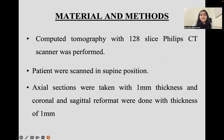CT was performed on a 128-slice Philips CT scanner. Patients were scanned in the supine position. Axial sections were taken with 1 mm thickness, and coronal and sagittal reformats were done with a thickness of 1 mm.